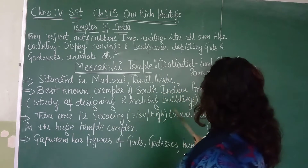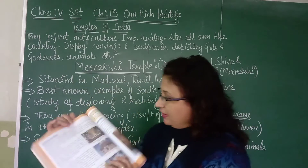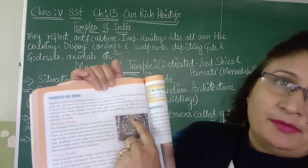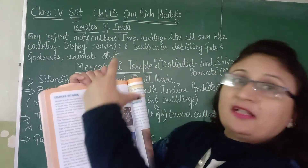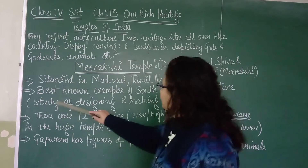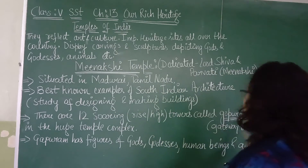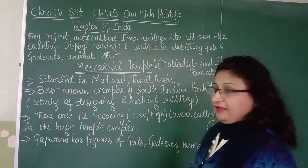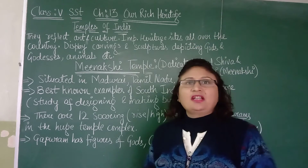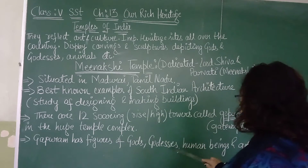Now, there are 12 soaring towers called gopurams. You can see them in the picture. Soaring means rising very high. Gopuram means a gateway tower. It is a very big temple complex with 12 soaring towers called gopurams. Each gopuram has figures of gods, goddesses, human beings and animals.